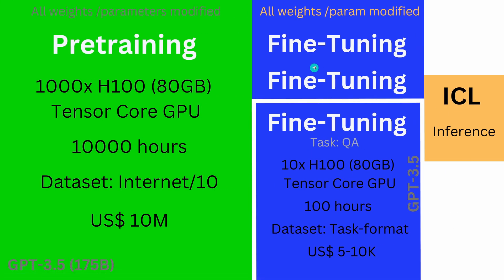Next step: fine-tuning. Fine-tuning is task-specific. You can fine-tune for task one, fine-tune for task two, and you can fine-tune for a task called question and answer. For a GPT-3.5 system, you need about 10 Tensor Core GPUs, A or H100, 80 GB each, about 100 hours in the cloud, and a dataset that is specifically formatted for the task.